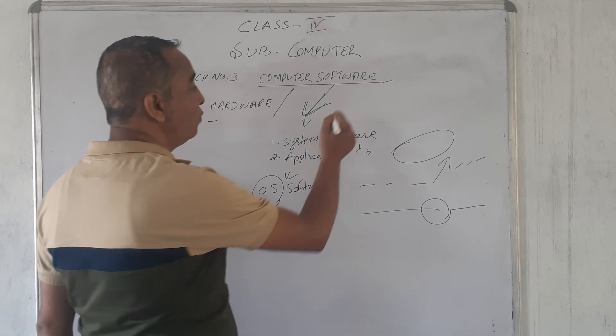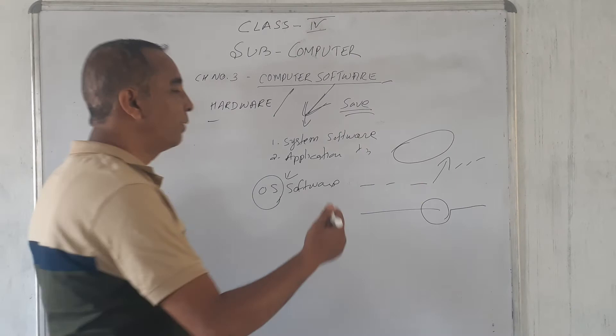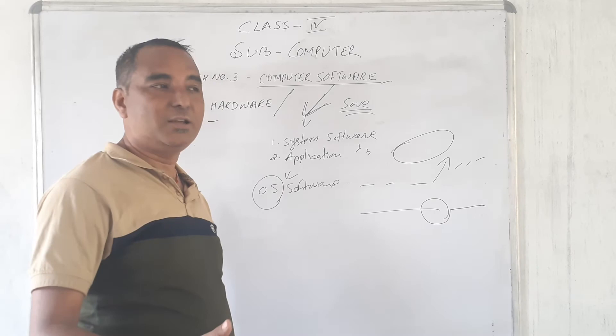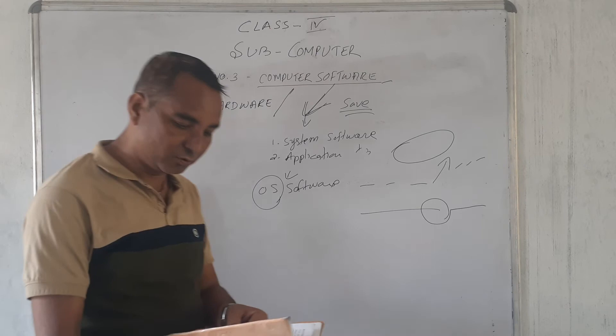And while saving, we have to save with a unique name, the file name. So that, after later on, whenever we want the file, we want that document, we want that program, then we can find it easily. That type of unique name we have to give for the file. So, that is the file name.